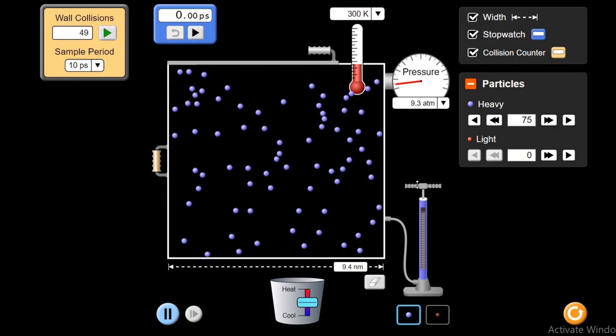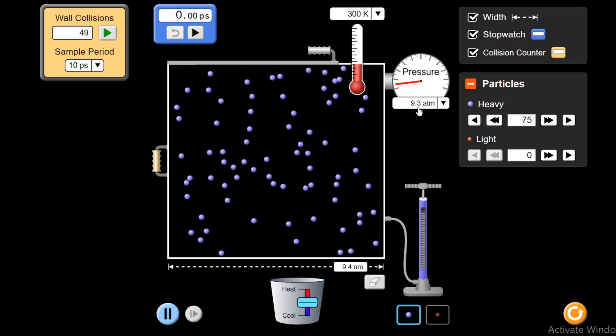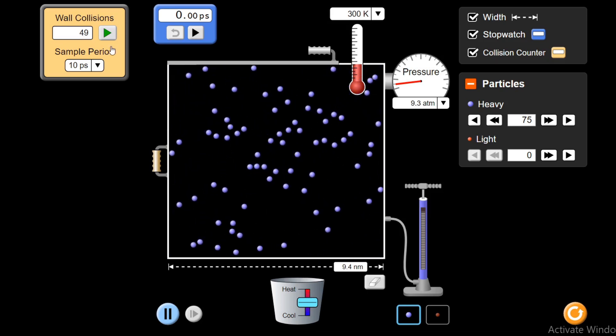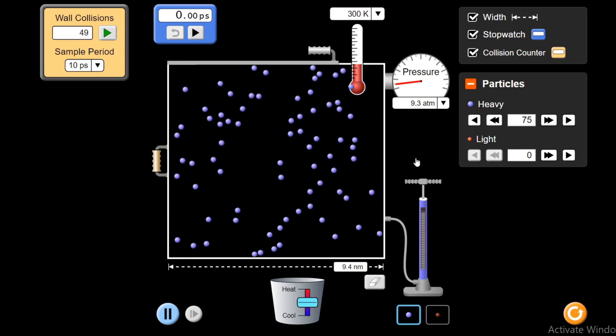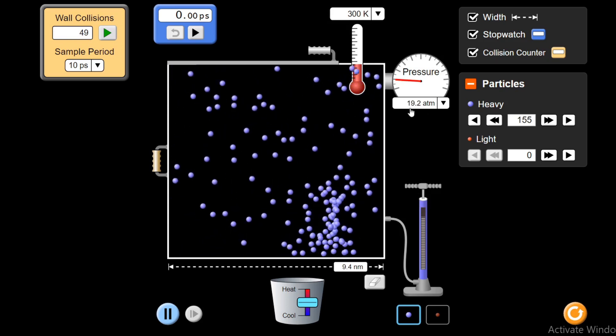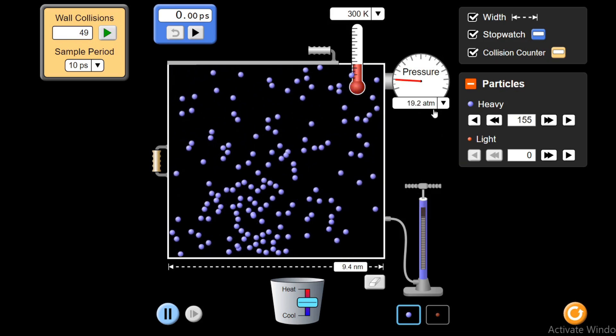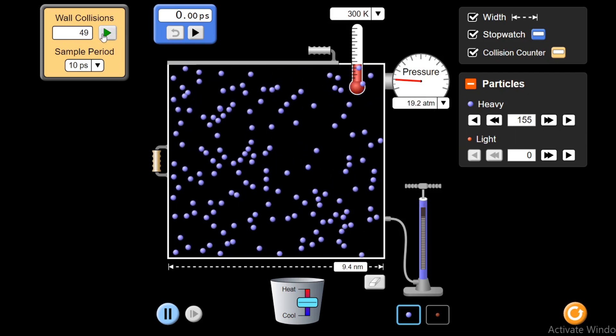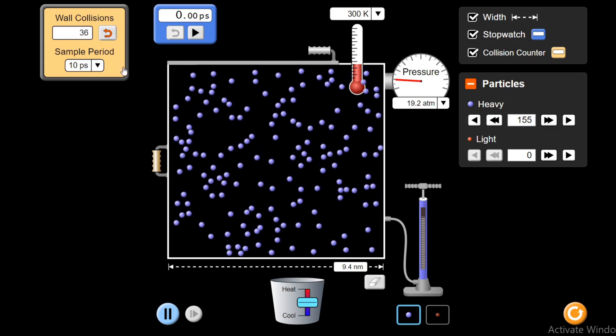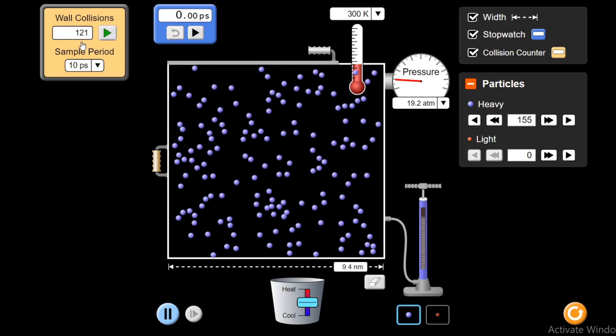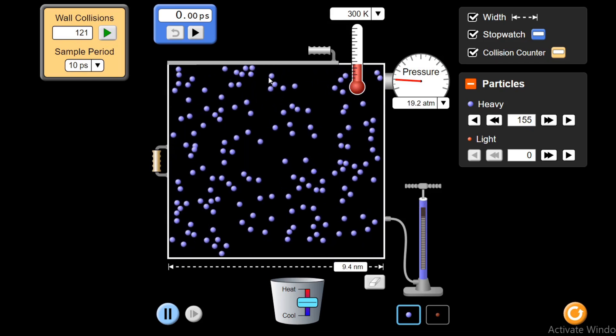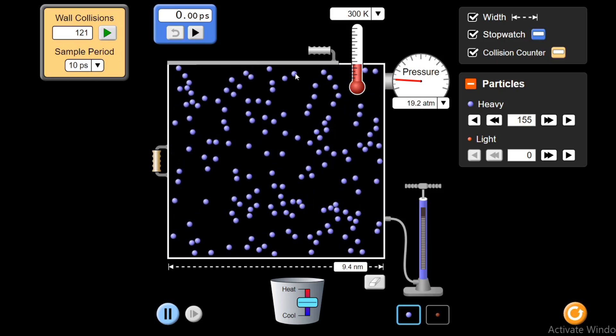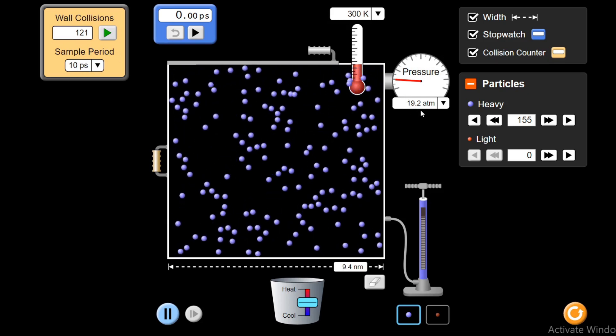First, let's do the experiment by increasing the number of molecules. Here, note down the atmospheric pressure, it is 9.3 atm and 49 collisions. From 9.3 the pressure has increased to 19.2 atm because of 155 particles. And let's again count the number of wall collisions. It has increased to 121 in 10 picoseconds. In this period of time, 121 collisions are taking place with the walls of the container. Pressure has increased to 19.2 atm.